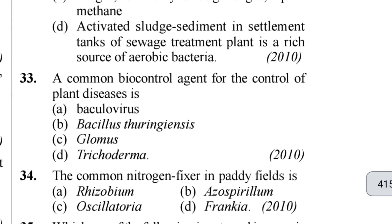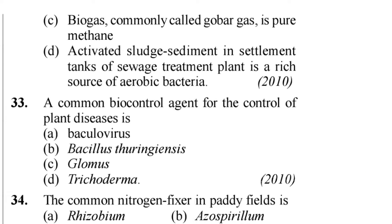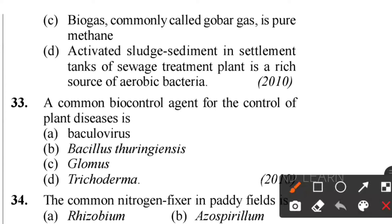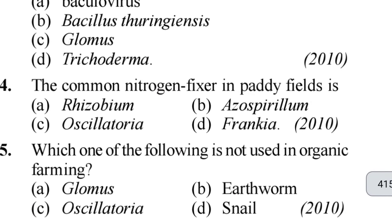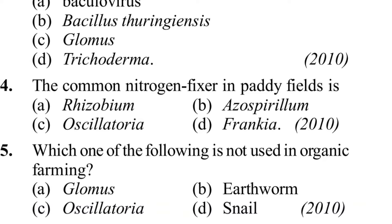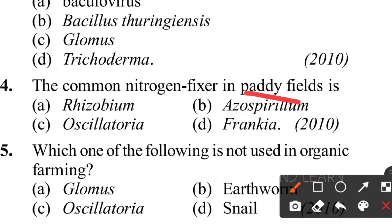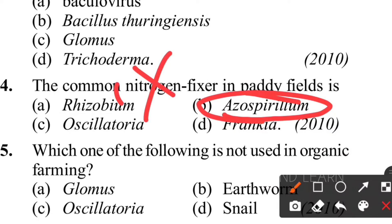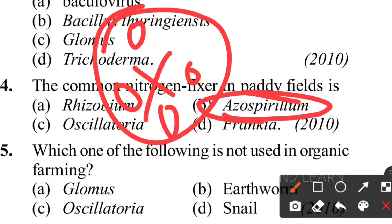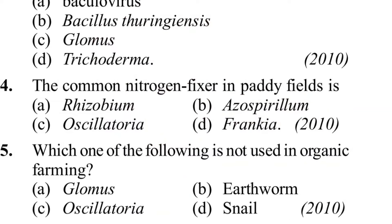Thirty-third question: a common biocontrol agent for the control of plant disease is option B - Trichoderma. Most questions about biocontrol agents use Trichoderma for control of plant disease. Thirty-fourth question: the common nitrogen fixer in paddy field is Azospirillum - very important for NEET. The common nitrogen fixer for paddy fields only is Azospirillum.